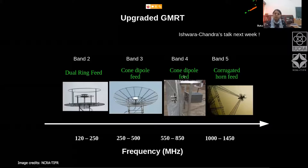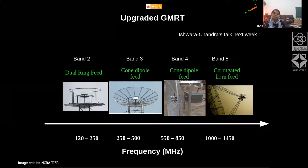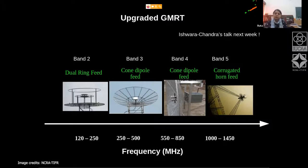At band four, we have the cone dipole feed again, which can collect data between 550 to 850 MHz. And there is band five, the L-band feed, which covers 1000 to 1450 MHz.